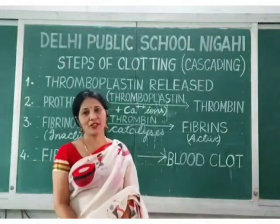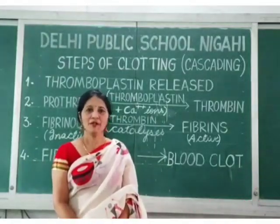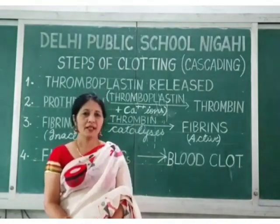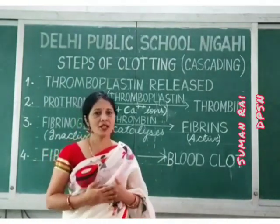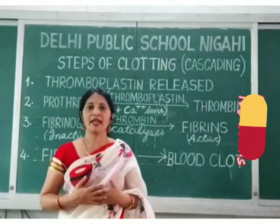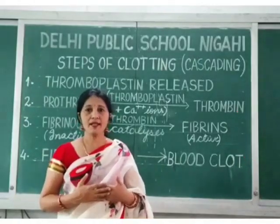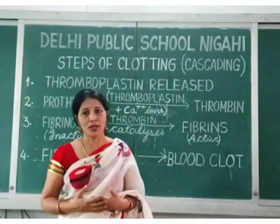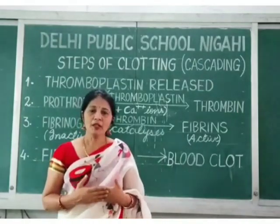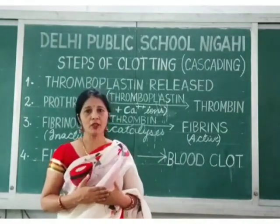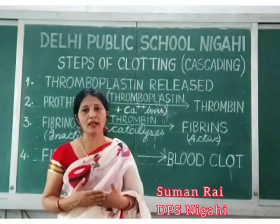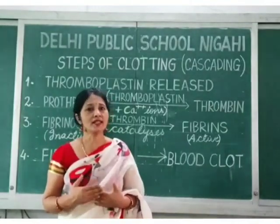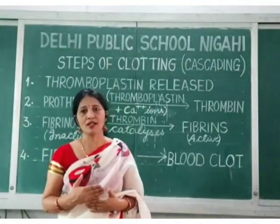Good morning children. Today we are going to learn the steps of blood clotting. Blood clotting is also called the process of cascading. In this process, blood changes from a liquid to a gel. The normal clotting time in human beings is 8 to 12 minutes. Let's watch a video to understand the process of clotting.